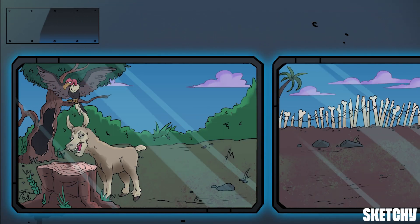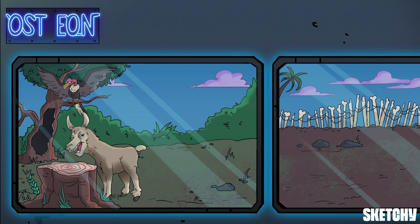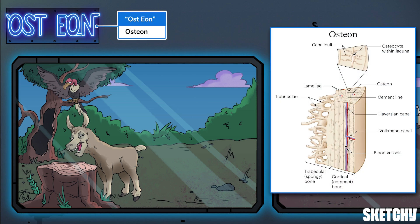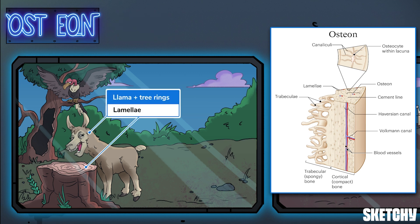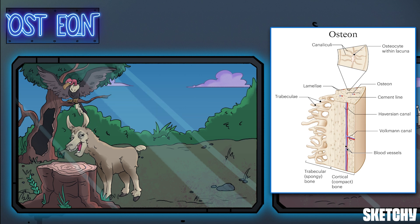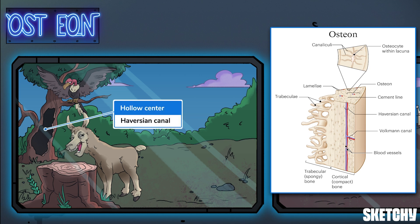First stop, the Osteon, which should remind you of an osteon, the structural unit of bone. This llama is standing next to the rings of this ancient tree stump because every Osteon is made of rings of bony matrix called lamellae. Osteons are also called Haversian systems because in the middle of every Osteon is a hollow central canal, or Haversian canal.